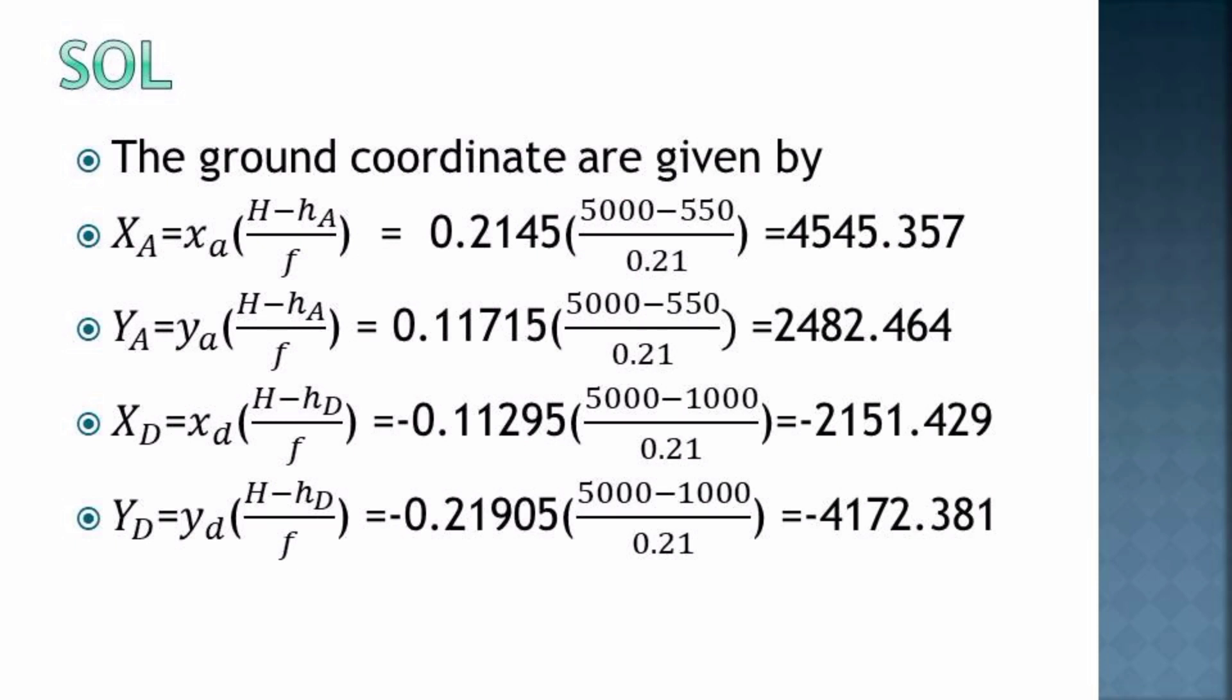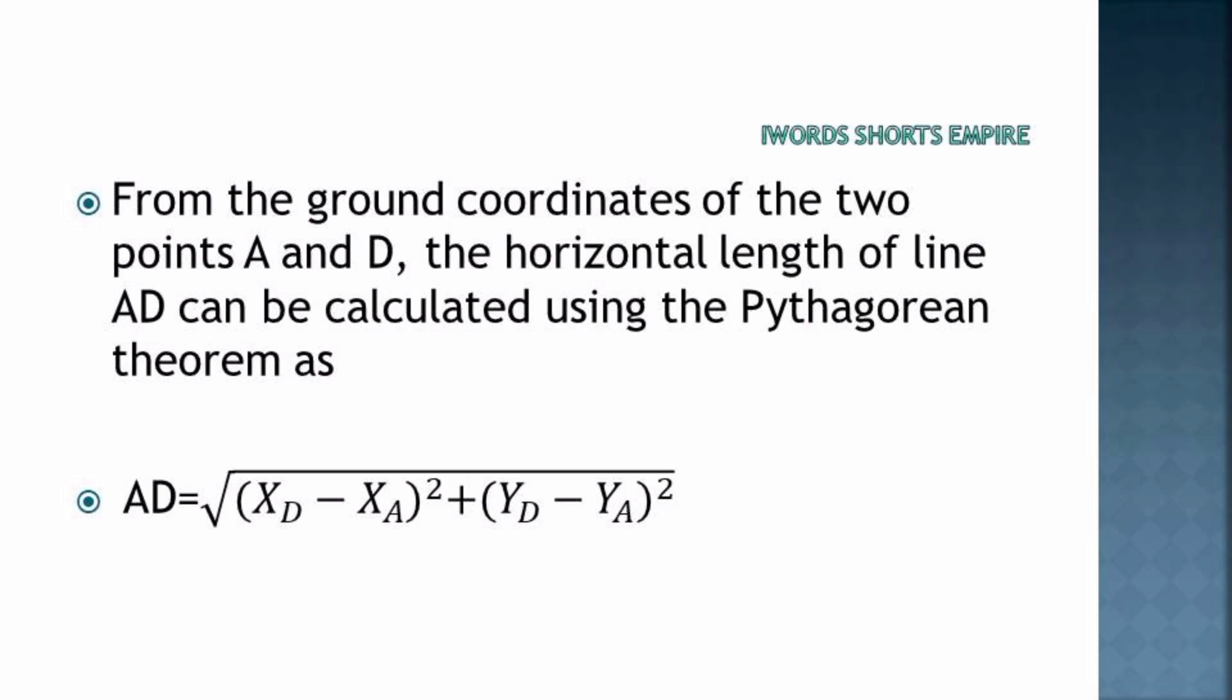From the ground coordinates of the two points A and D, the horizontal length of the line AD can be calculated using the Pythagorean theorem. The distance AD equals the square root of the difference in the ground coordinates of D and A squared, plus the difference in the ground coordinates on the Y-axis squared.